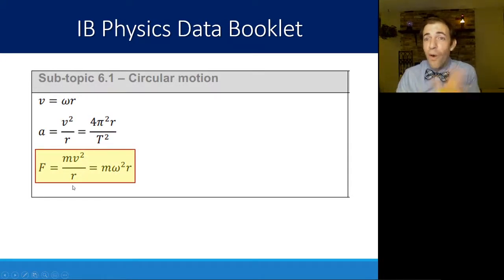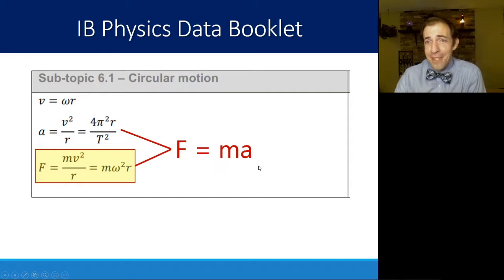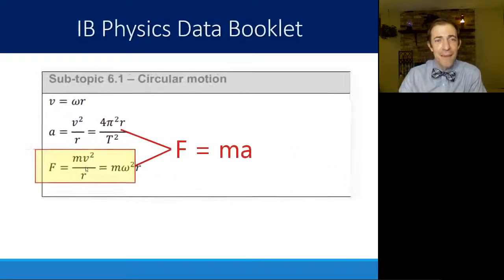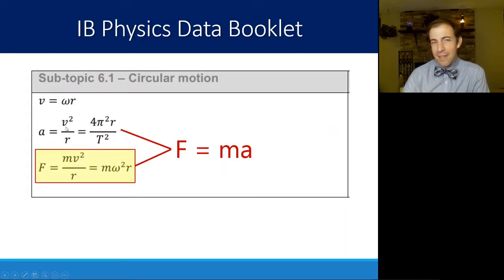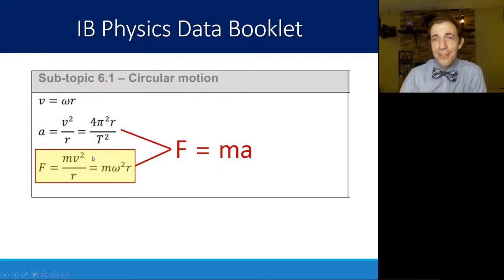F = mv²/r or F = mω²r. These force equations are closely related to the acceleration equations. If you know F = ma, the first equation is essentially the same as v²/r — the only difference is you're multiplying by mass. So if you know the acceleration, you can just use F = ma instead of going back to a larger equation.